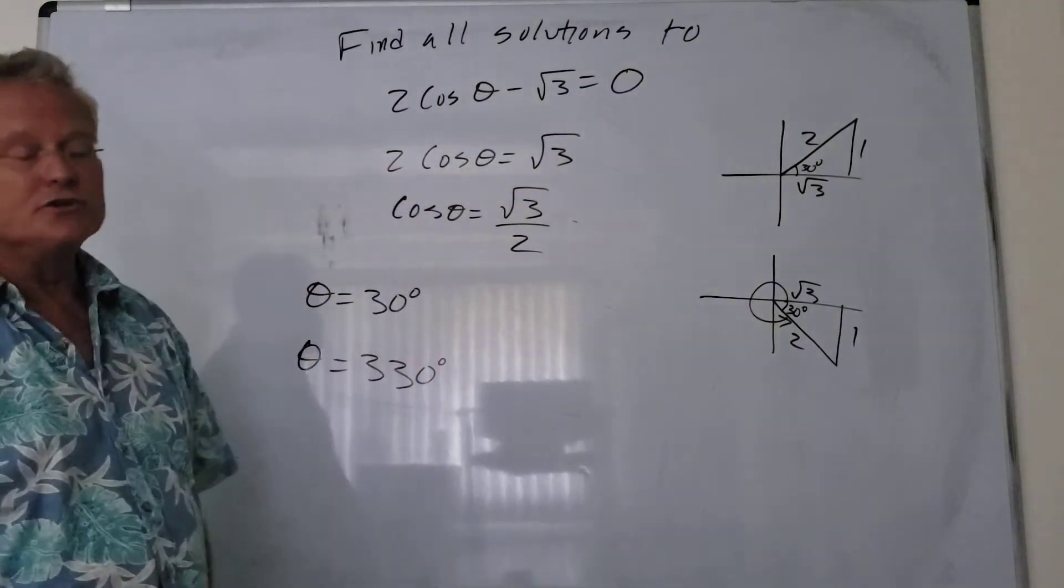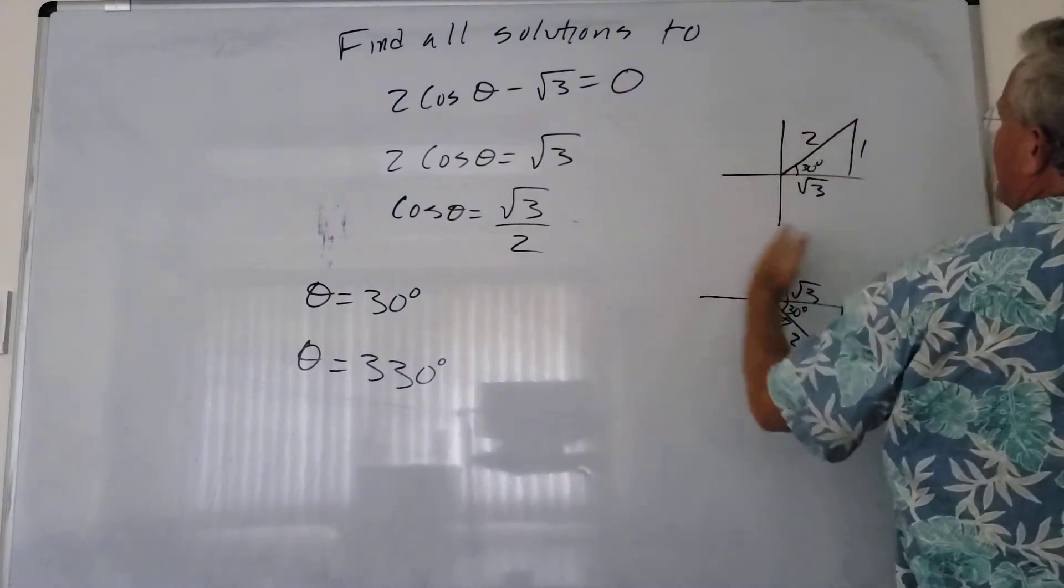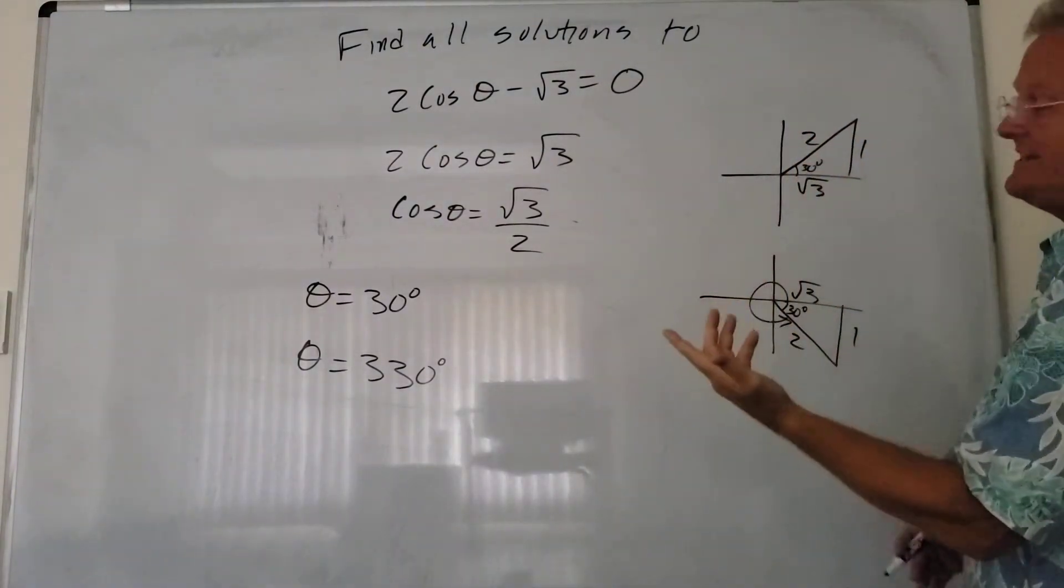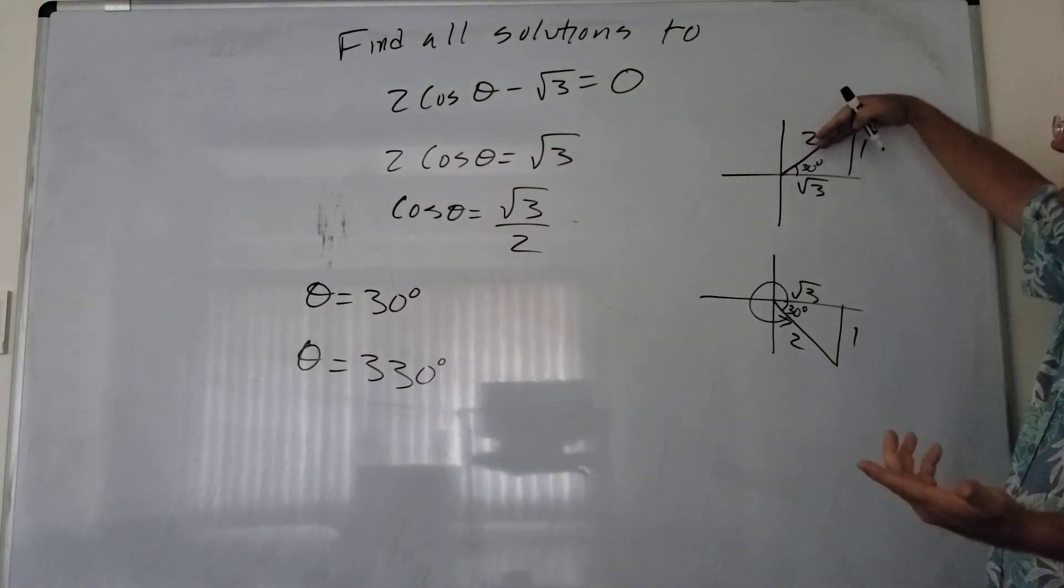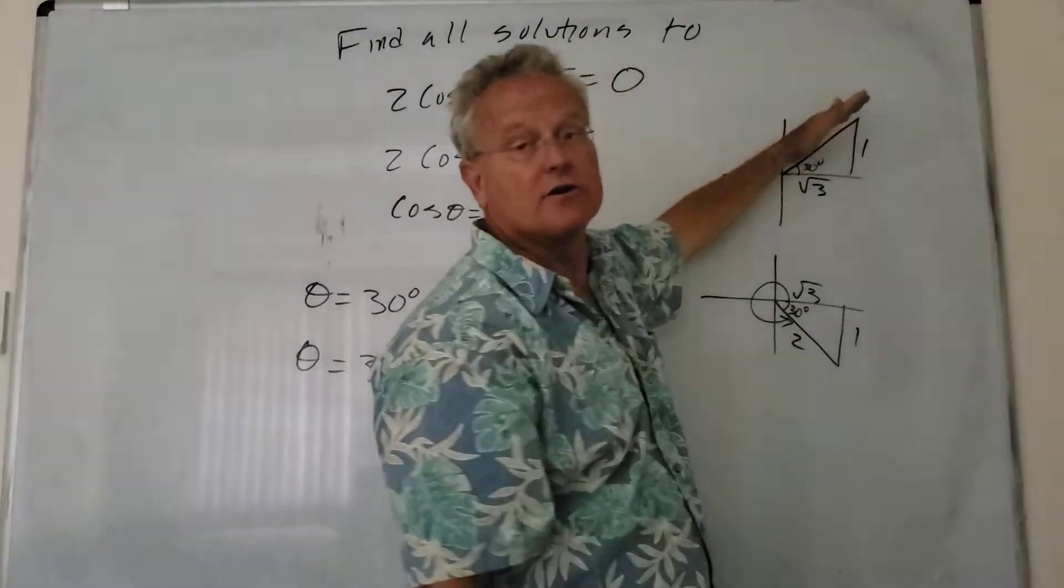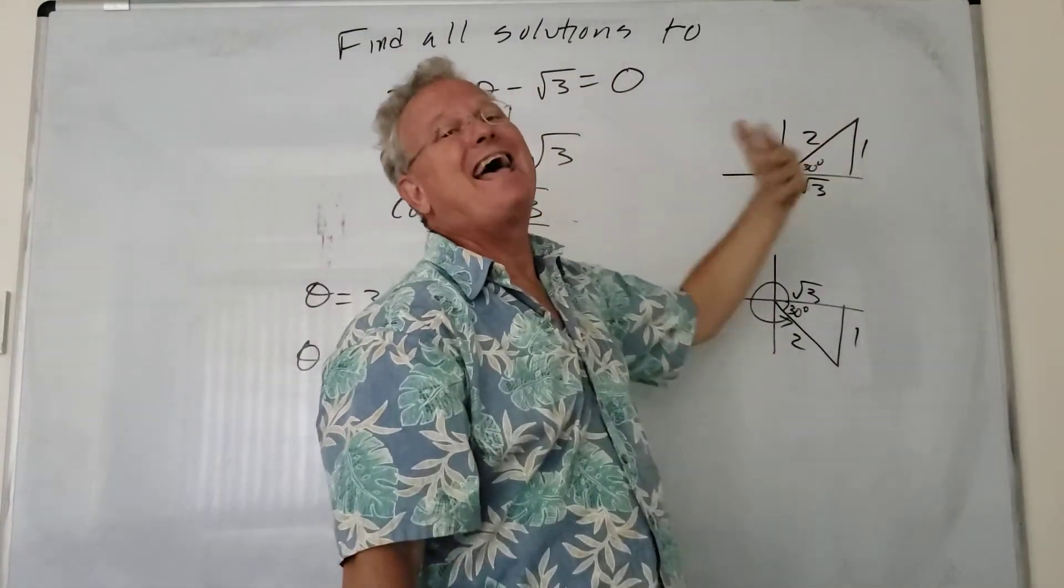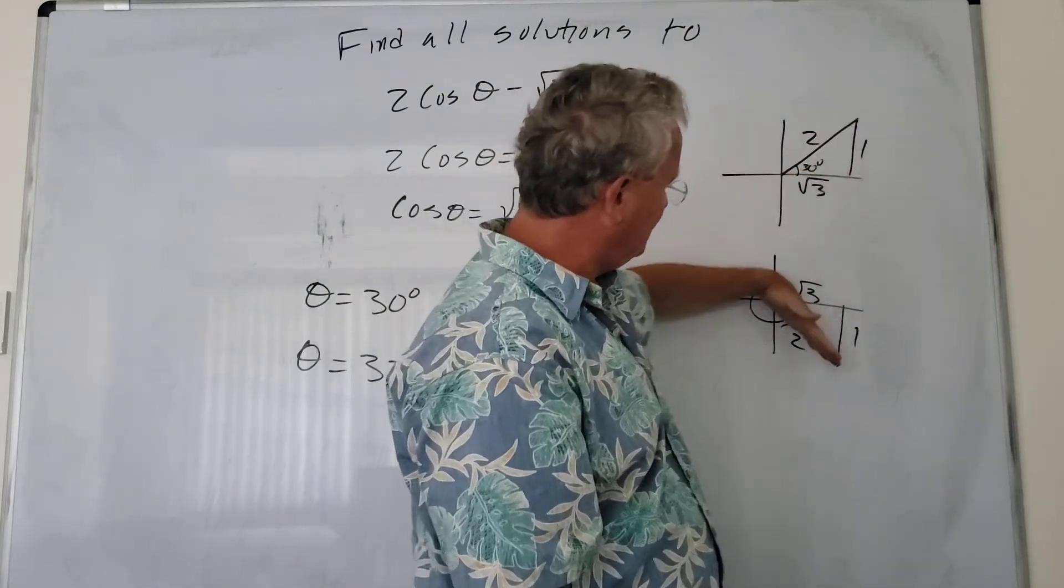But we're asked to find all the solutions. So notice here whenever we add a multiple of 360, it comes right back to the same spot. It's a coterminal angle. We could also subtract 360.